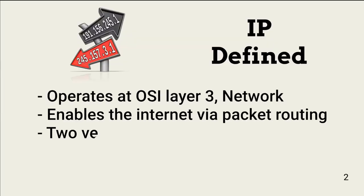The Internet Protocol, or IP, operates at the network layer of the OSI model. It enables the Internet by ensuring packets successfully locate and travel to their destinations via routing. There are two versions of IP in use: IPv4 and IPv6.